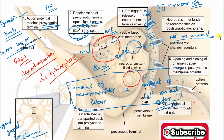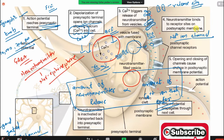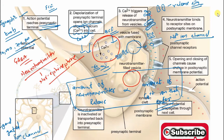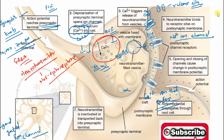It depends which ion channels open, which determines whether the neuron is excited or inhibited, and how the stimulus is received. Step five: opening and closing of channels causes a change in post-synaptic membrane potential. The ligand-gated channels open the sodium channels. Because sodium concentration is much higher in the extracellular fluid than intracellular fluid, sodium influx occurs through passive diffusion from higher to lower electrochemical gradient, changing the post-synaptic membrane potential.